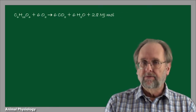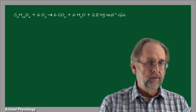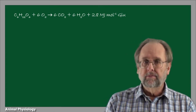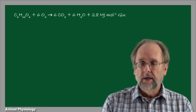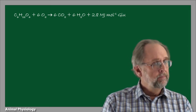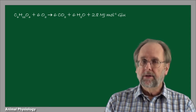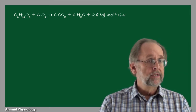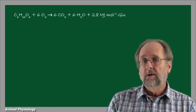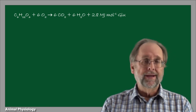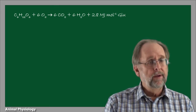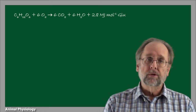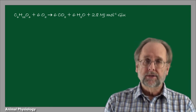Indirect calorimetry starts with a basic chemical equation for oxidation of fuels to energy. This chemical equation varies from fuel to fuel, a complication we will come back to later, but for glucose and other hexoses, the basic equation boils down to this one: one mole of glucose plus six moles of oxygen are converted to six moles of carbon dioxide plus six moles of so-called metabolic water.